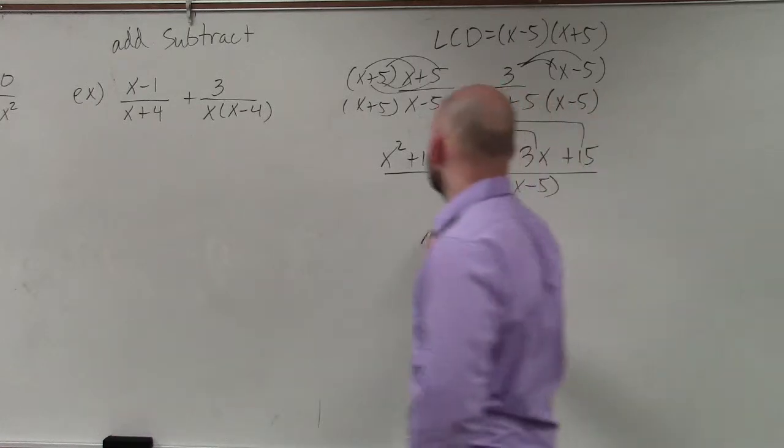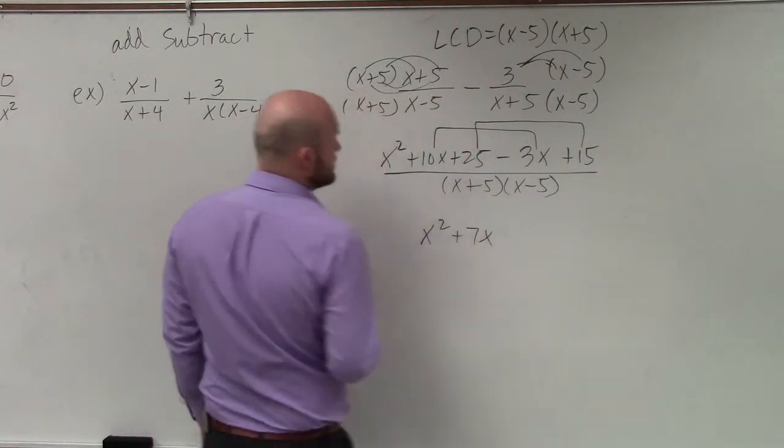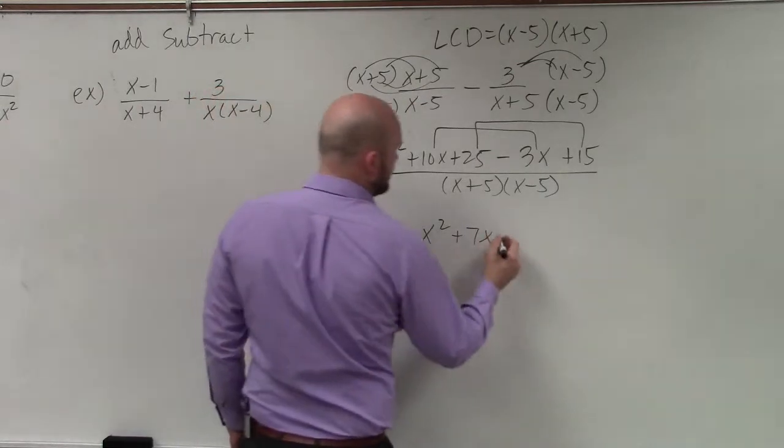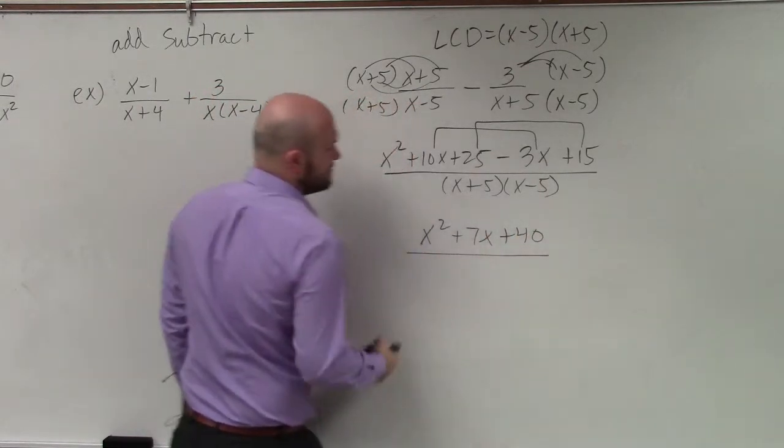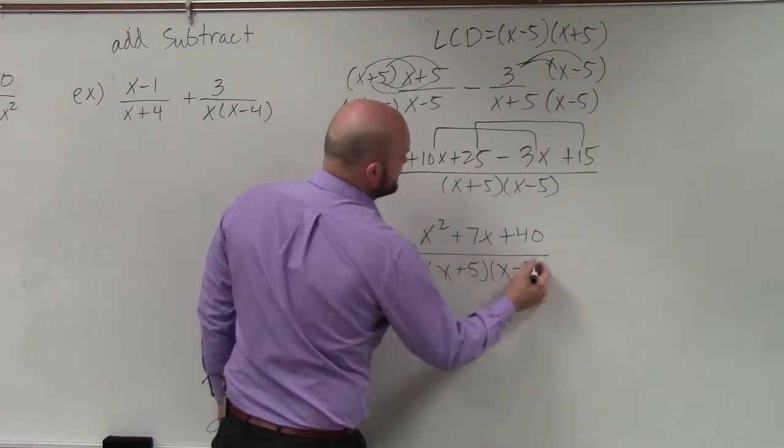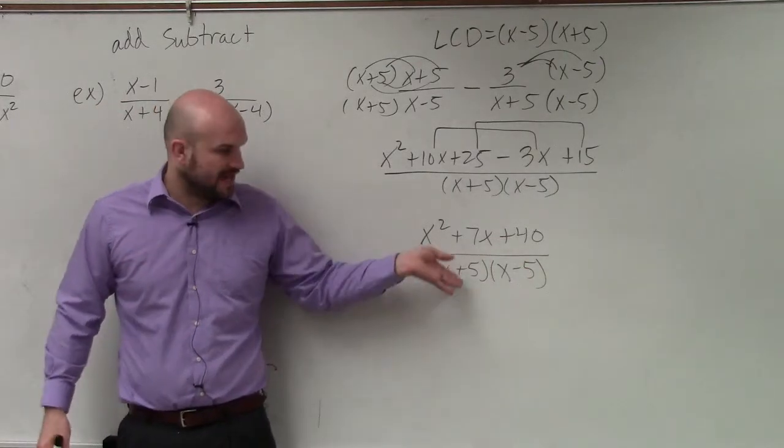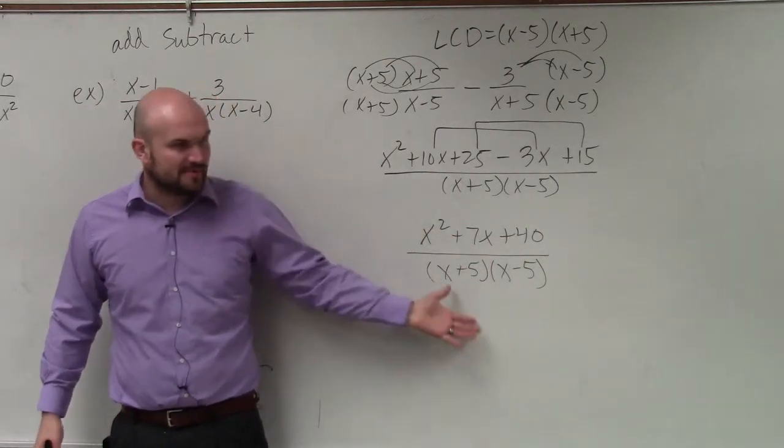So my final answer is x squared plus 7x plus 40 divided by x plus 5 times x minus 5. Obviously, ladies and gentlemen, you can multiply also your denominator, which would be x squared, excuse me, minus 25.